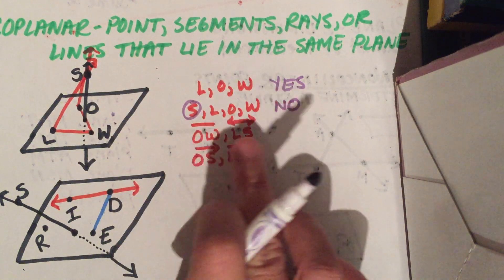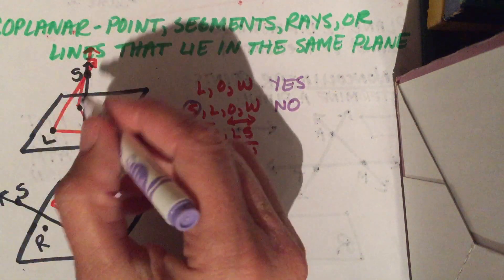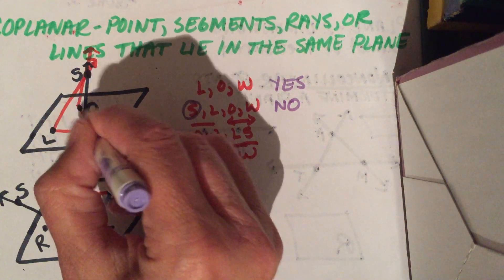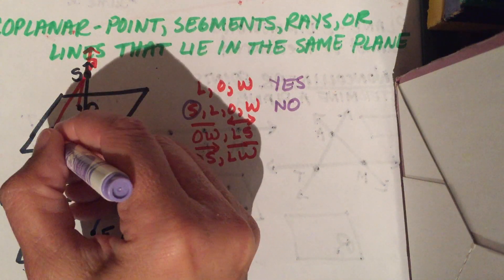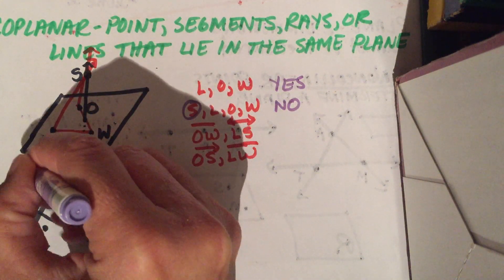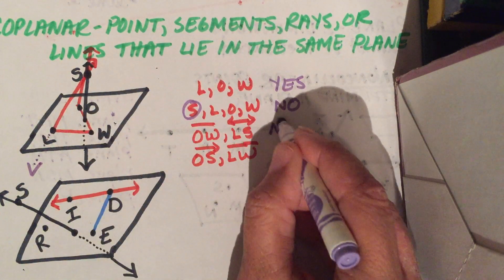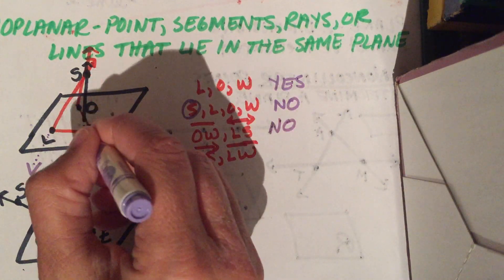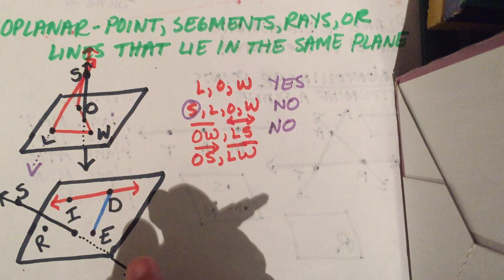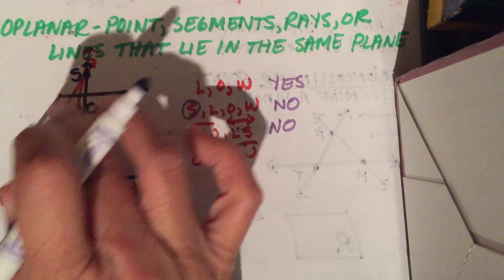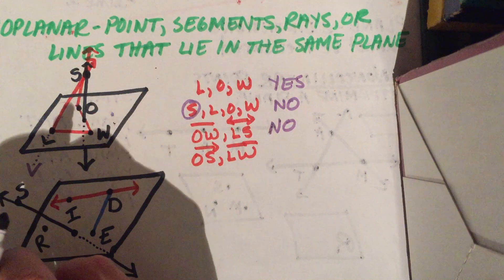How about segment OW and line LS? Segment OW is here, line LS is here. The answer is no. They are not in the same plane. OW is in the flat plane. Imagine the S as a line that goes through your paper like a pencil that's pierced your paper. LS comes through here. They are not in the same plane.